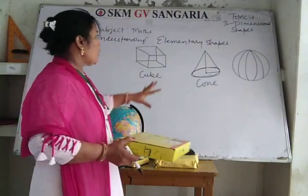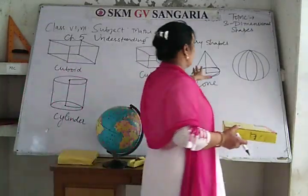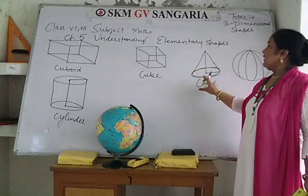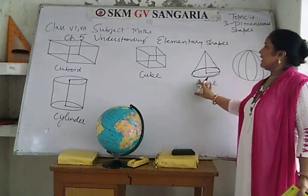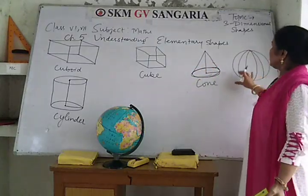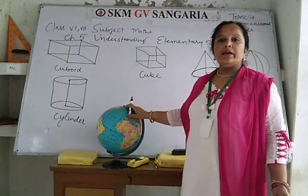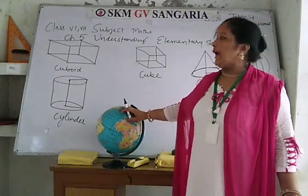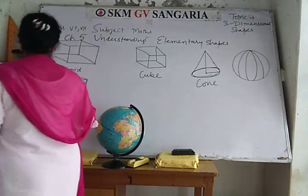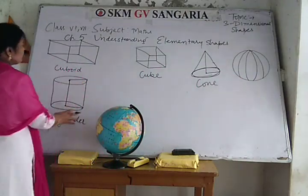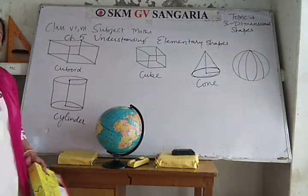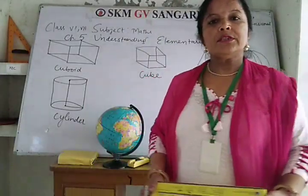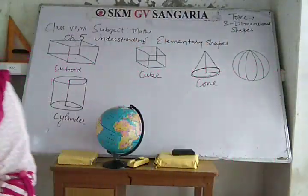A cone has one curved surface and one flat surface. A sphere has only a curved surface — it has no edge. A cylinder has two plane surfaces and one curved surface.